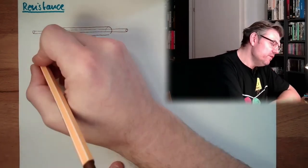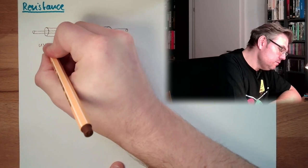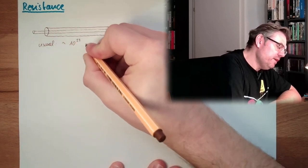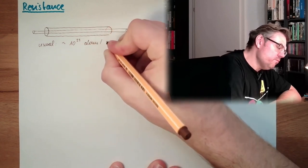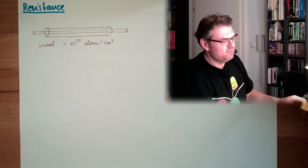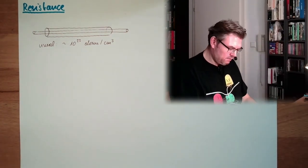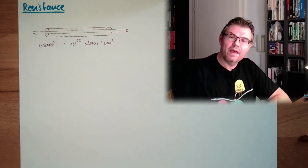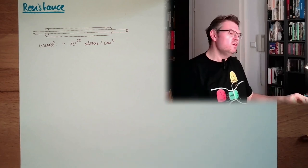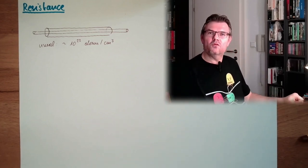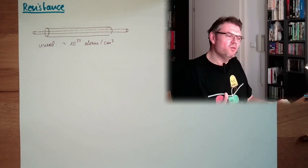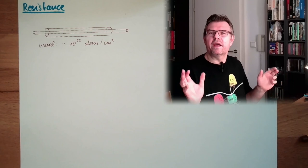In usual materials, we have around 10 raised to the power of 23 atoms per square centimeter. That many atoms are inside by square centimeter. And those are available in conductive material for conductance, for the current. If you think that one atom can spare one electron, for instance.